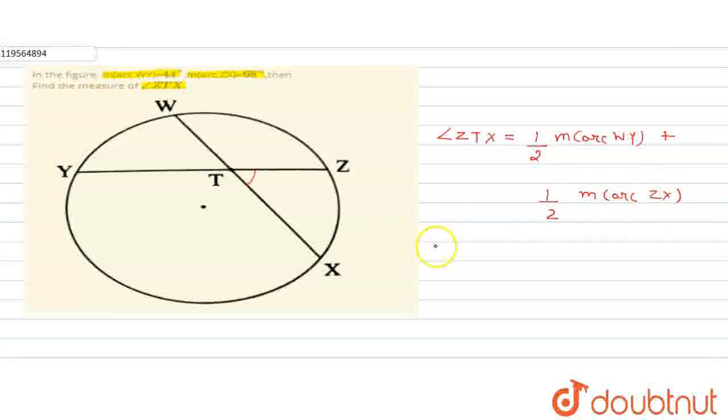So angle ZTX equals half of 44 plus half of 68. Now we will solve this. Half of 44 is 22, and half of 68 is 34.